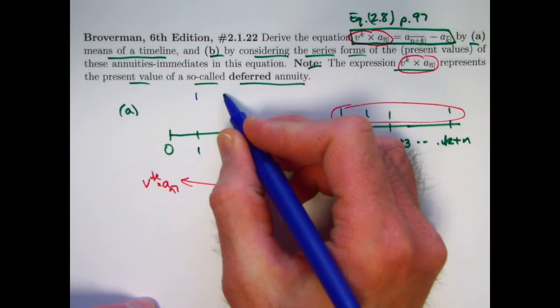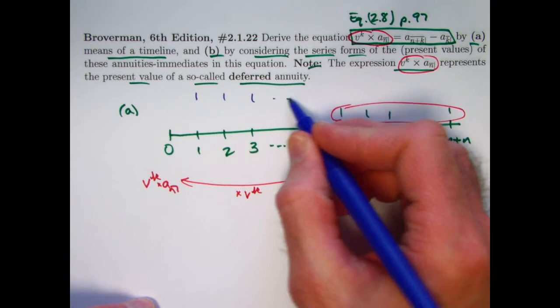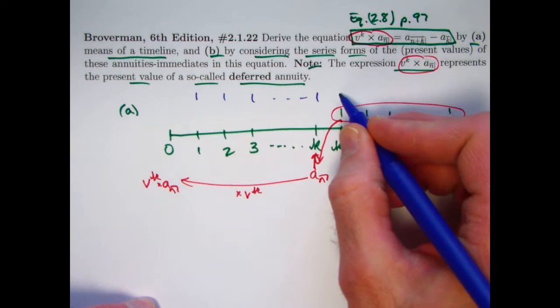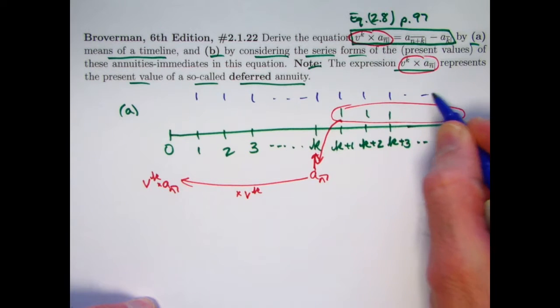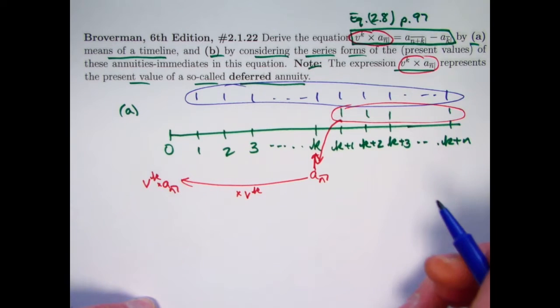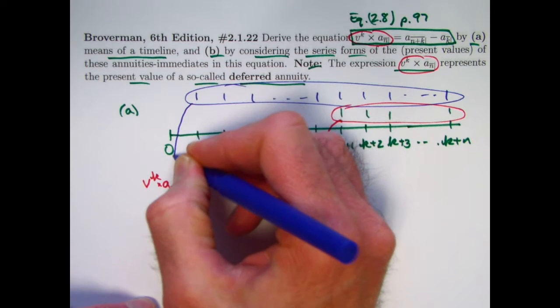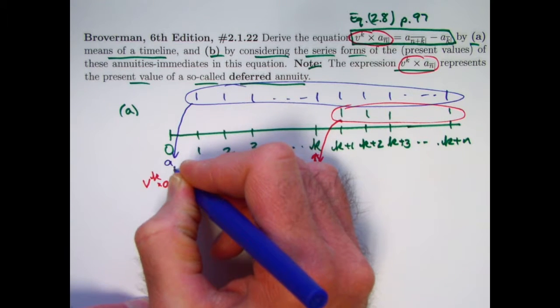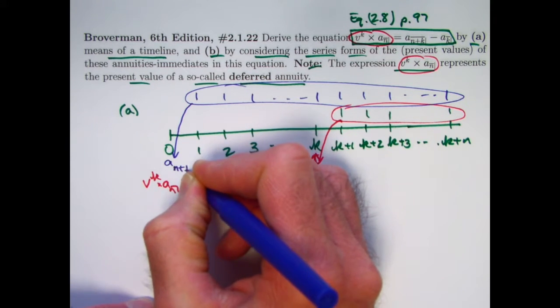If we imagine an annuity immediate starting at time one, and we're going to evaluate the present value of that at time zero, and going up to time K plus N, certainly the present value of all K plus N of those payments at time zero is symbolically represented by A sub N plus K.